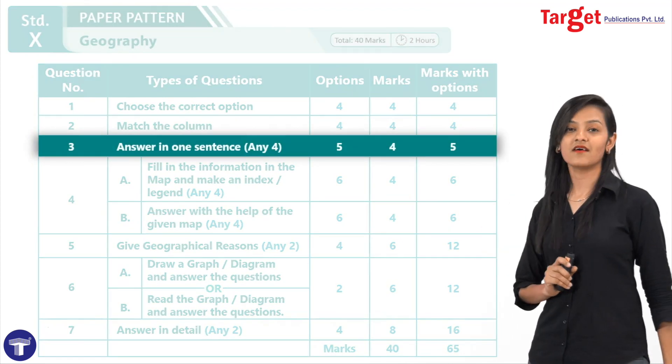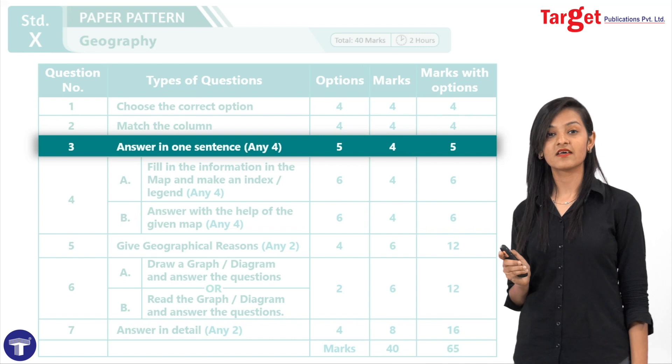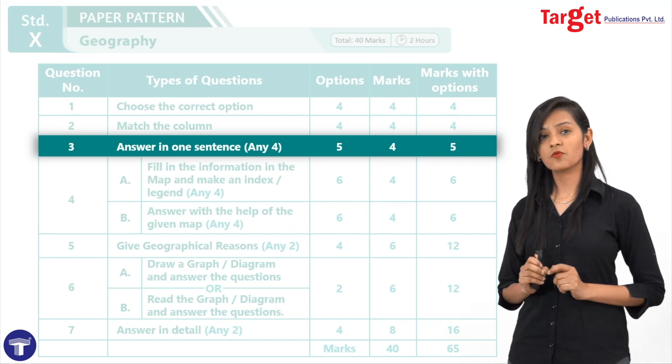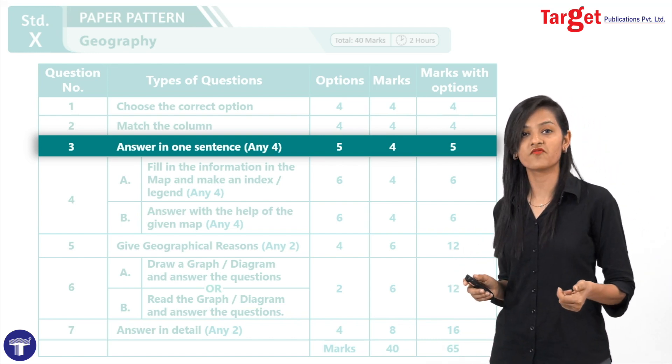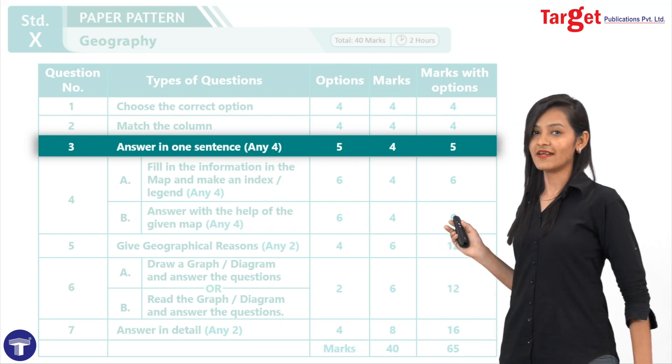Now, third is question number three, answer in one sentence. Again, this question has a little bit more number of types than the earlier two. Let us have a look.